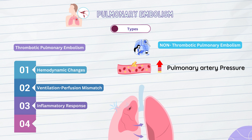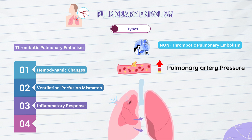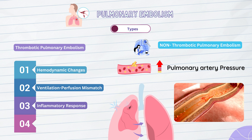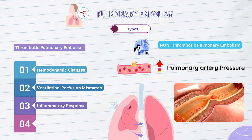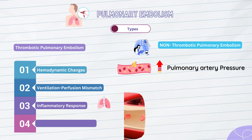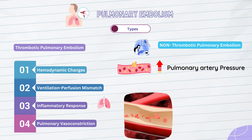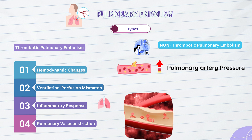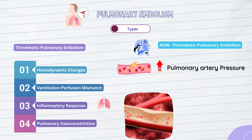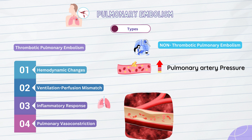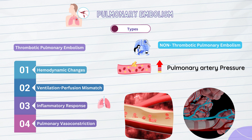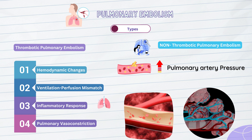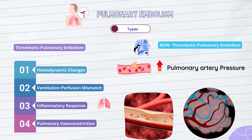Inflammatory response: the presence of a pulmonary embolus triggers an inflammatory response within the affected pulmonary arteries. This inflammatory process can further contribute to the narrowing of the blood vessels and exacerbate the obstruction. Finally, pulmonary vasoconstriction: the obstruction caused by the embolus can lead to localized vasoconstriction in the pulmonary arteries. This serves as a protective mechanism to redirect blood flow to healthier areas of the lungs. However, excessive vasoconstriction can further increase pulmonary artery pressure and worsen the hemodynamic consequences.